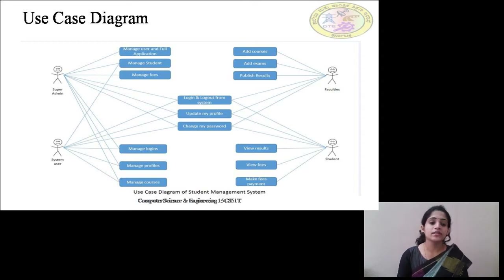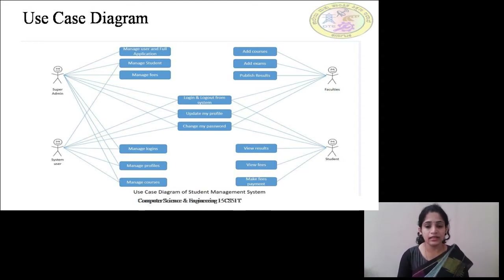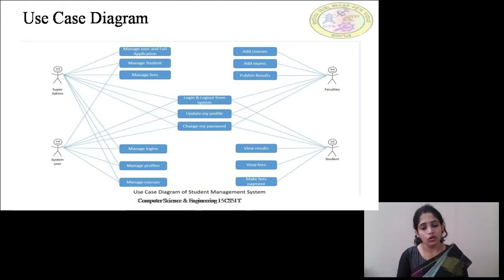The second primary actor is System User, who comes below the super admin. Before doing anything, the system user has to log in. After login, he can update his profile. In the absence of the super admin, the system user is able to manage the logins of faculties and students, manage their profiles, and manage courses. Before doing any of these activities, the system user has to get authorization from the super admin, then log in, do the required activities, and log out.